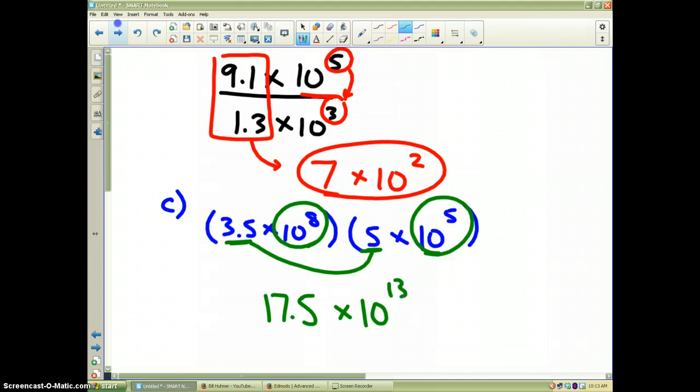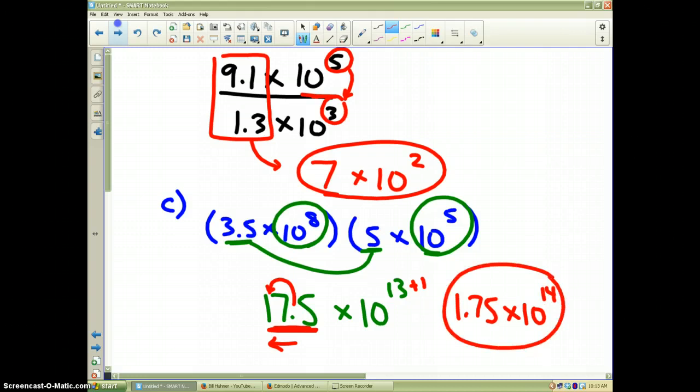The only problem with this—if you guys remember scientific notation—this number right here has to be between 1 and 10, and right now it is not. So I need to take the decimal and move it back one spot to get 1.75, which now is a number between 1 and 10. But if I move the decimal back this way, I have to add 1 to the power. So therefore, I would have times 10 to the fourteenth, and that would be the final solution for this particular example.